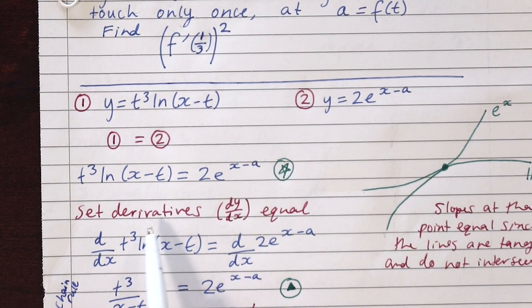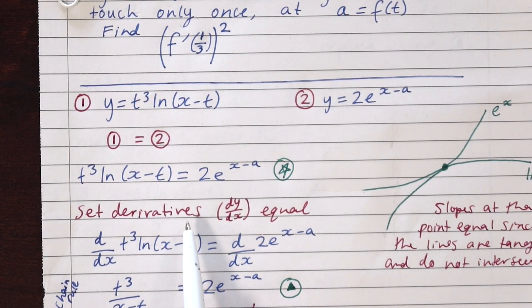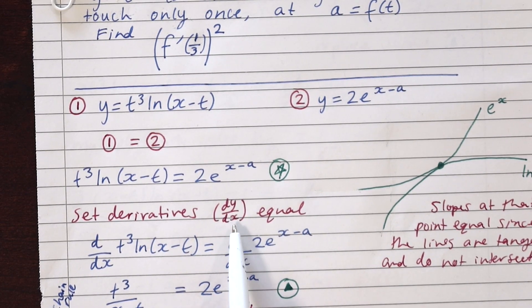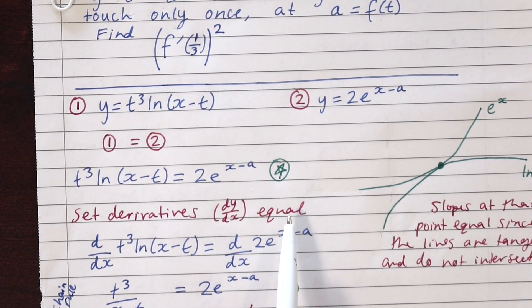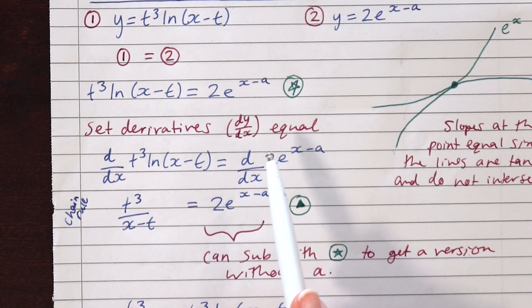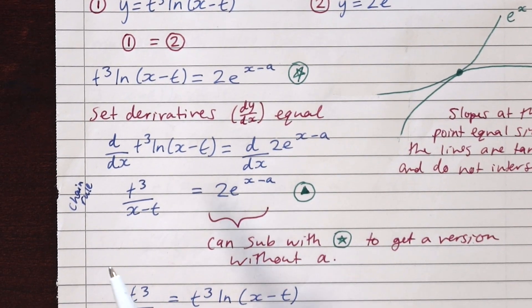Instead, we need a bit of a brainwave that we can also set the derivatives, that is dy/dx equal to each other. Because at this point, since they're tangent, the slopes of each line would be equal. So we can differentiate each side and set them equal.